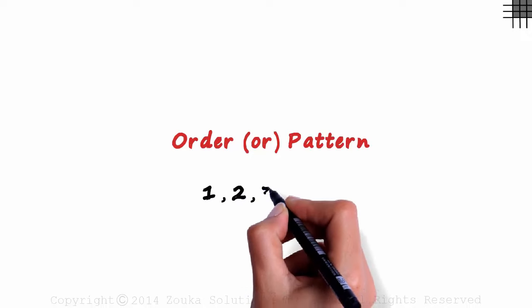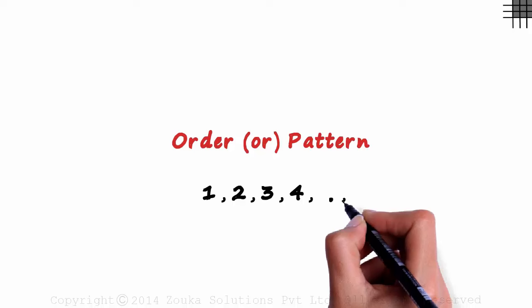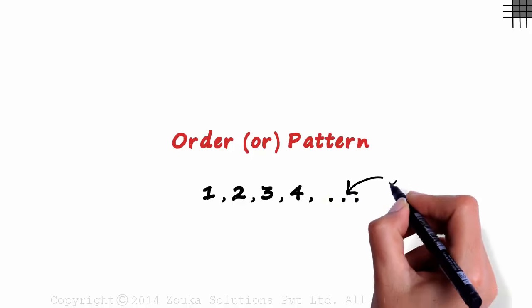1, 2, 3, 4 and so on. The numbers follow an increasing pattern. The three dots mean the list goes on forever and are referred to as the ellipsis.